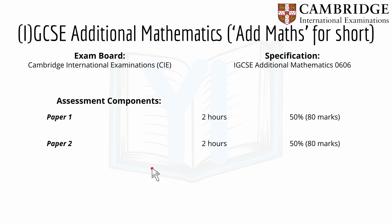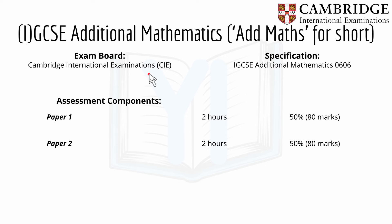Here I'm going to introduce some information. The exam board I'll be using is the Cambridge International Examinations, or CIE/CAIE, and the specification is IGCSE Additional Mathematics 0606.